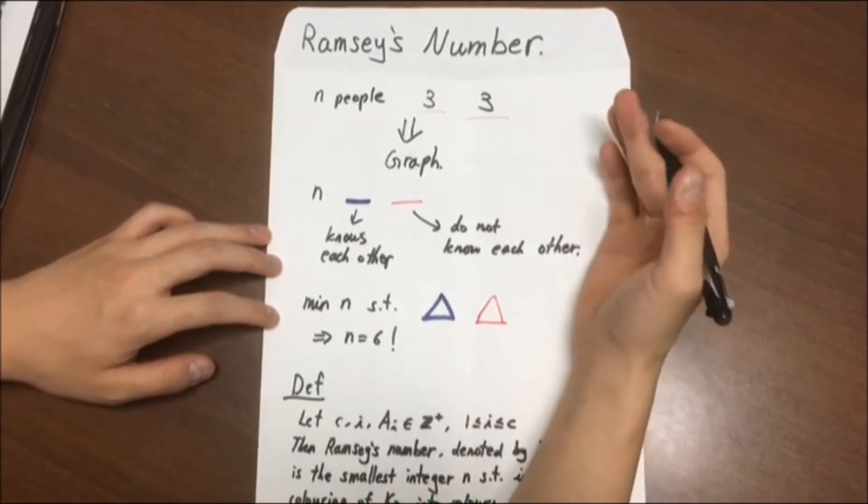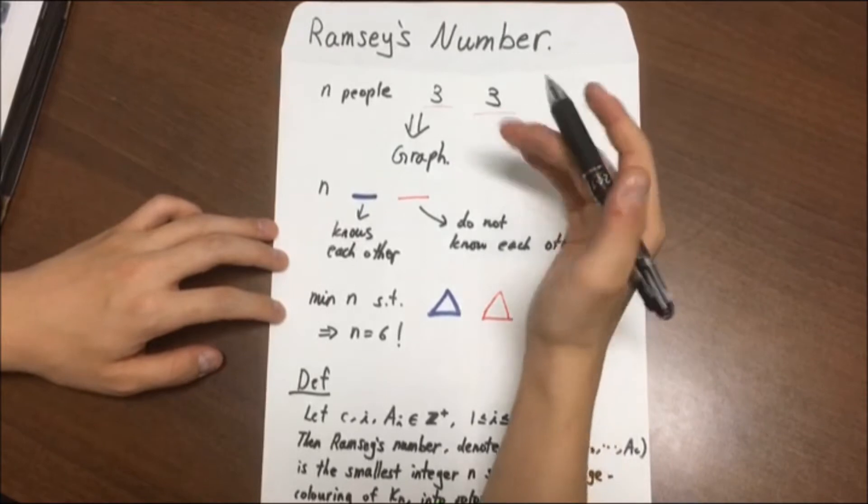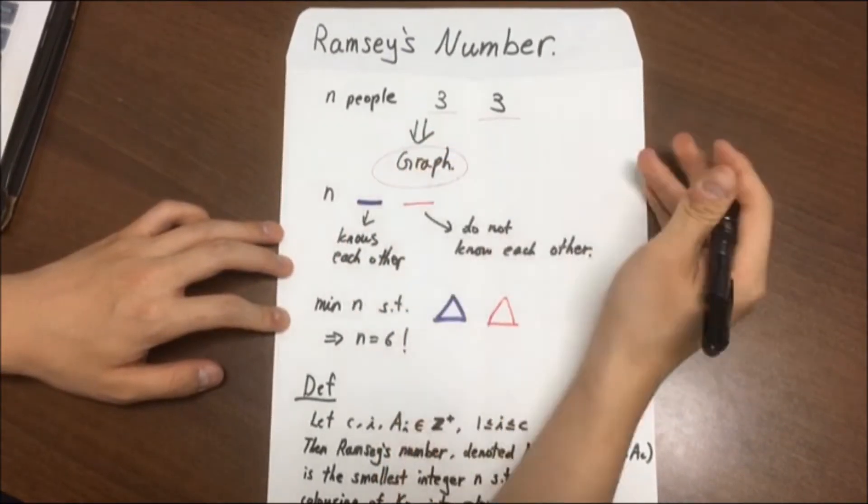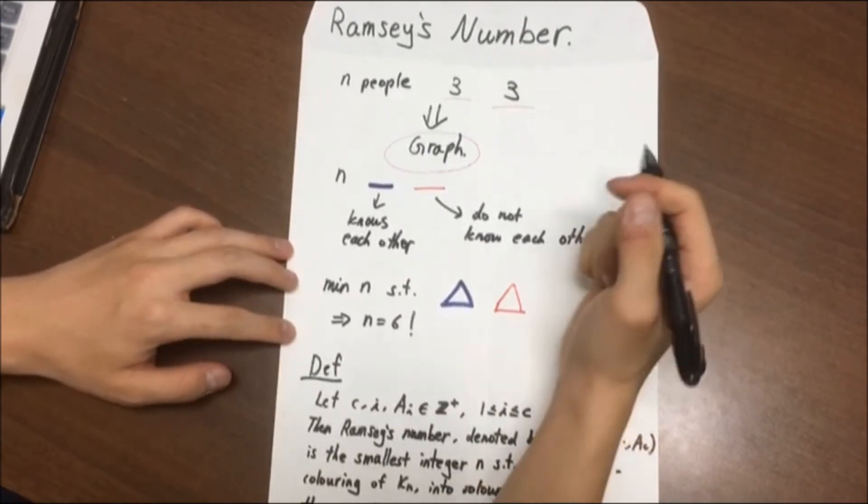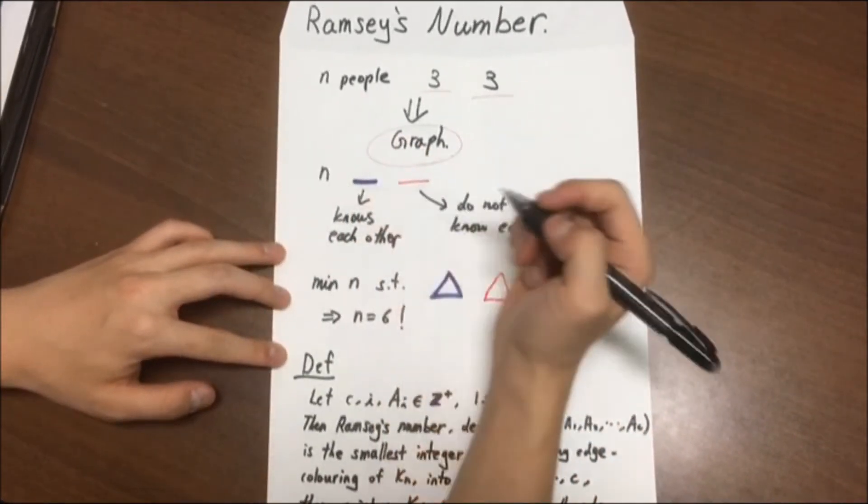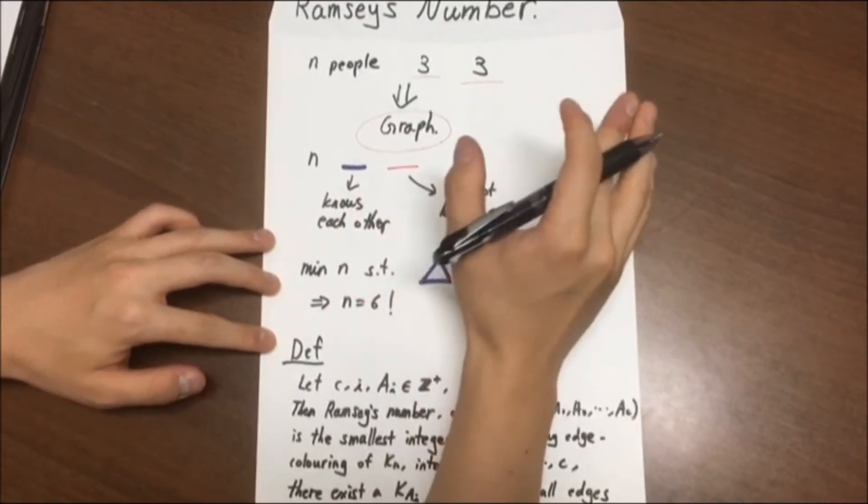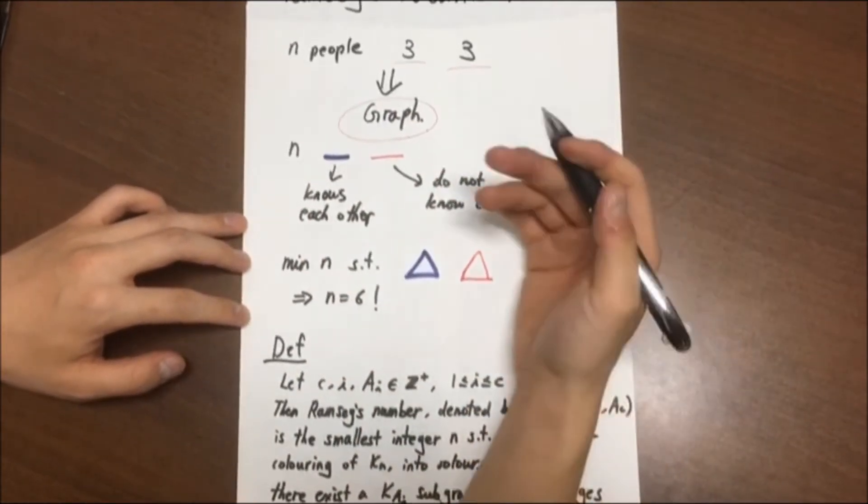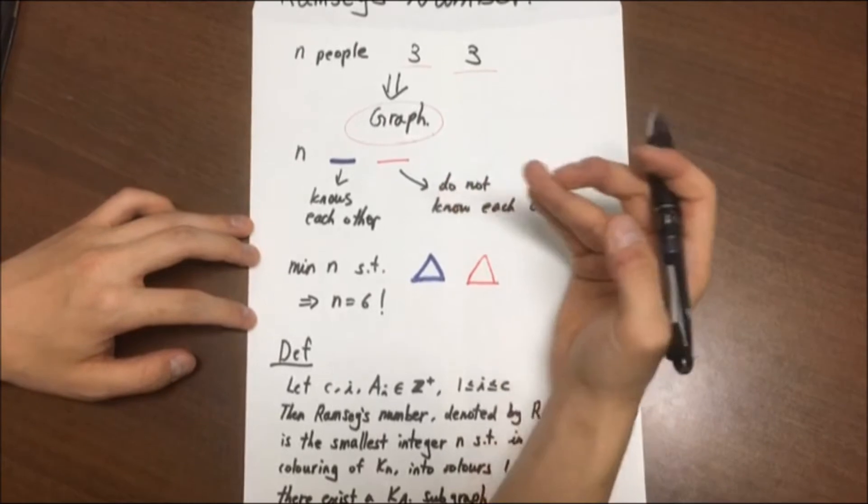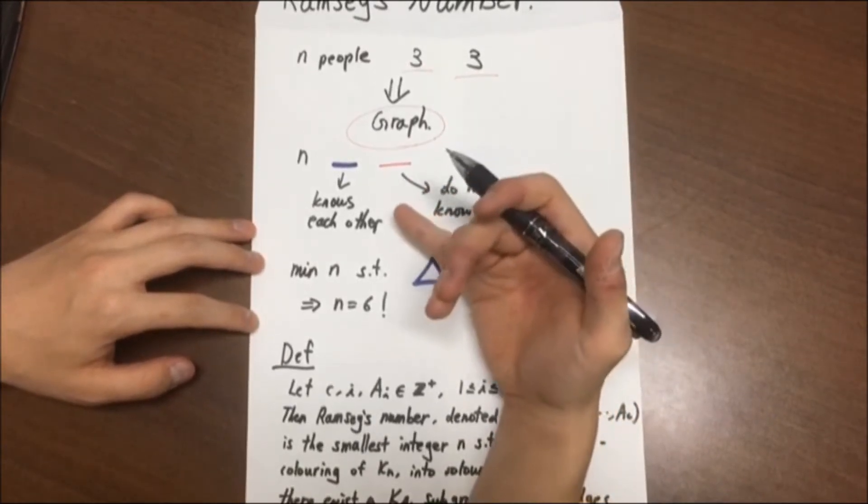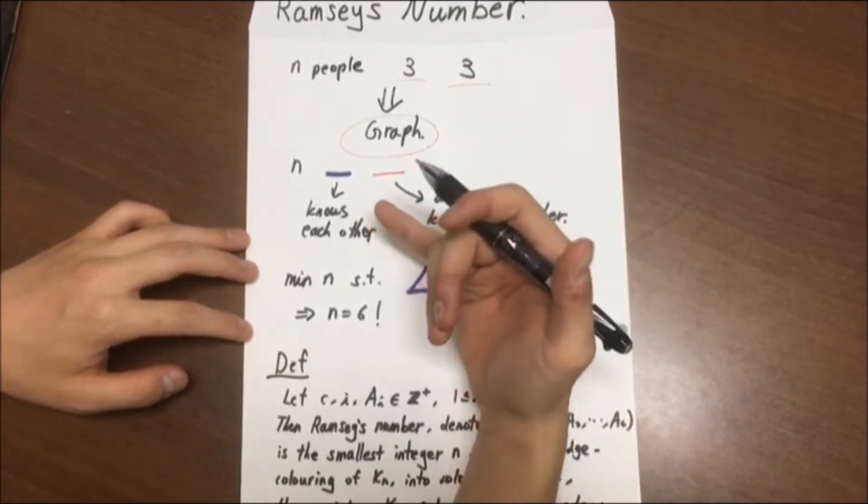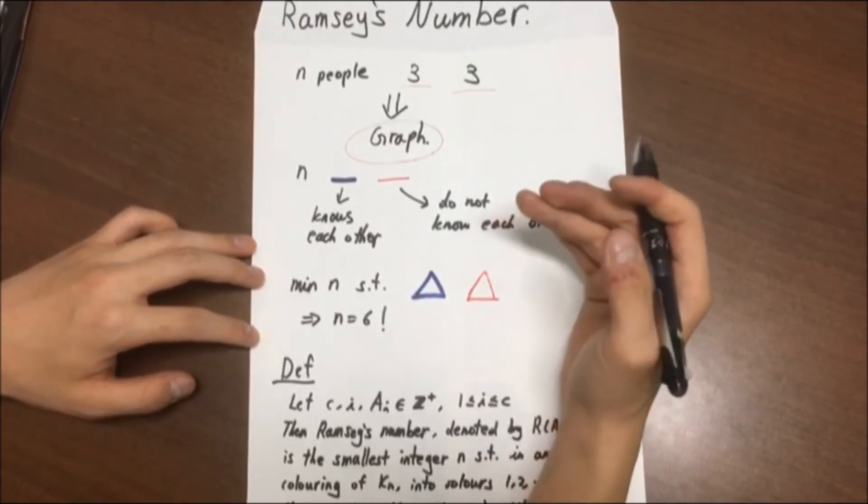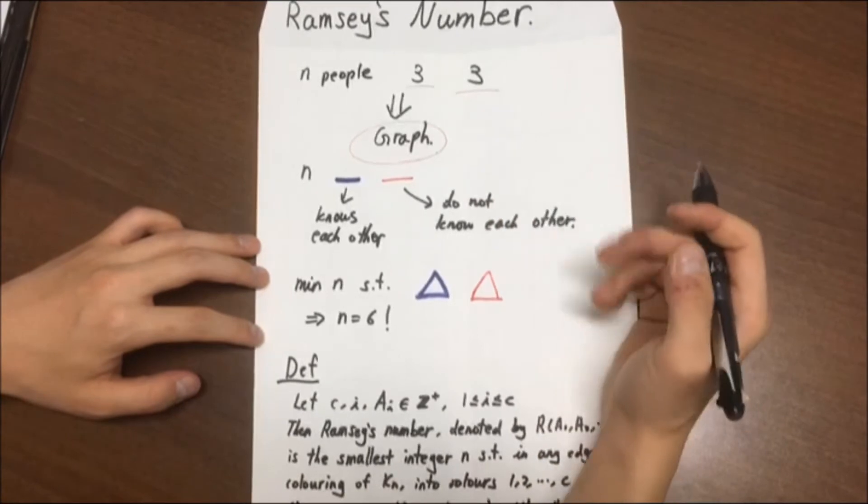Well, to formalize the problem so that it is more mathematical, let us view the problem through the notion of graph. For some positive integer N, we're going to color all edges of K_N either by blue or by red. We can suppose that two vertices that are connected by a blue edge are equivalent to two people who know each other,